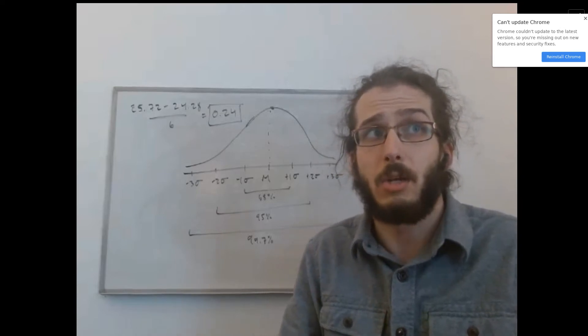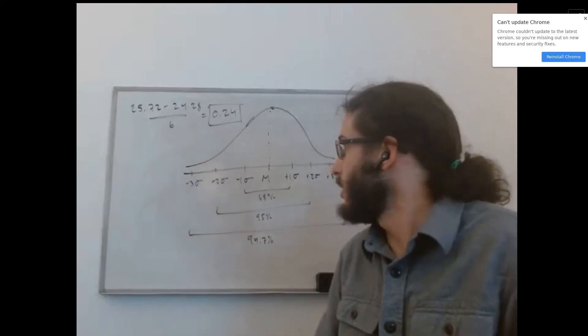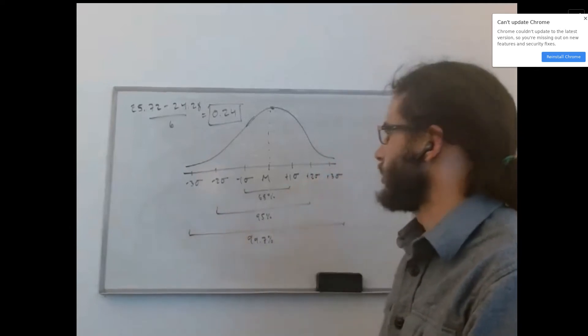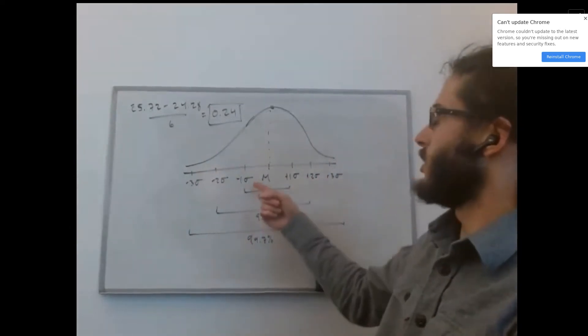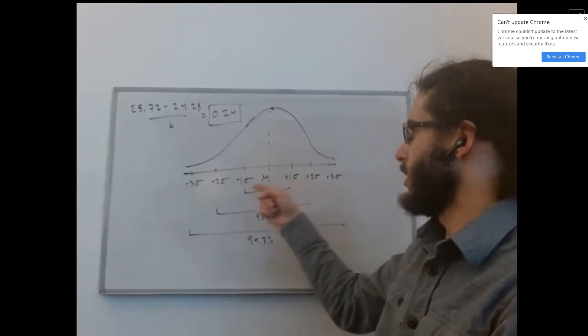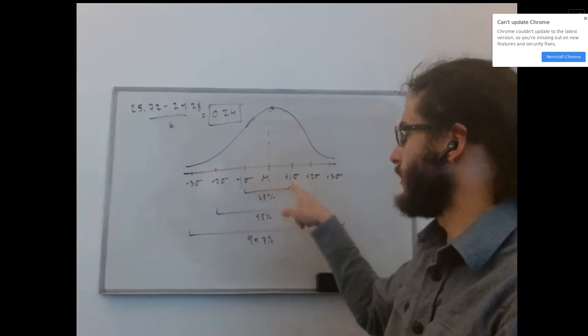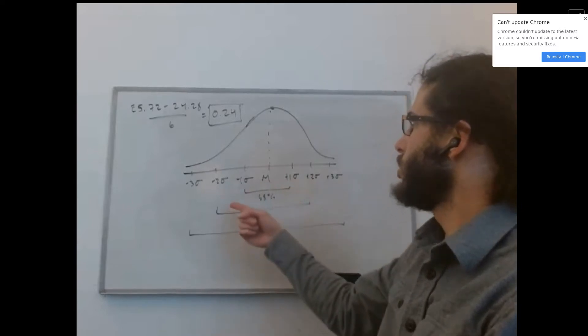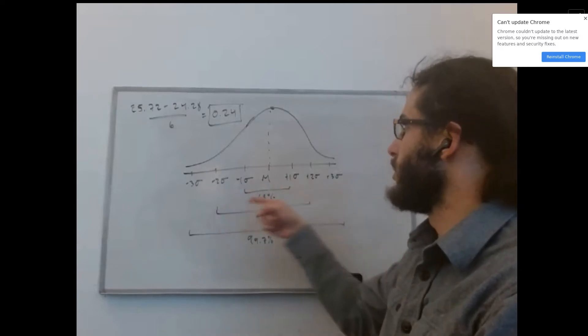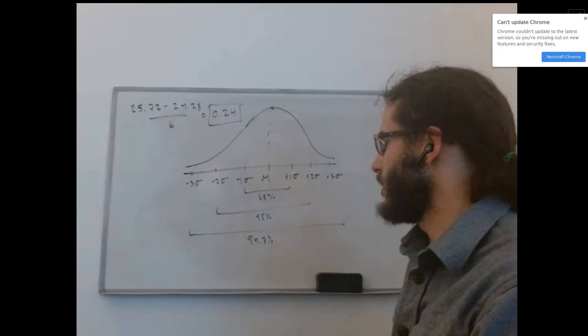And I would imagine you might have learned in your class that the implications of this rule are that 68% of our data in a normally distributed set of data will fall within one standard deviation of our mean, while two standard deviations above or below the mean will include 95% of our data.